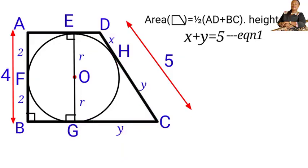Similarly, at point A, A is the external point, and these two line segments also act as tangent to this circle. This length will be equal to this length. This length is 2 units, so this length will also be 2 units.